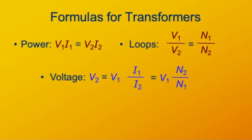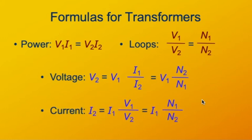The voltage ratio, or loops ratio, and the current ratio are reciprocals of each other. The current in the secondary equals the current at the primary times the ratio of the primary voltage to the secondary voltage, or times the ratio of the number of primary windings to the number of secondary windings.